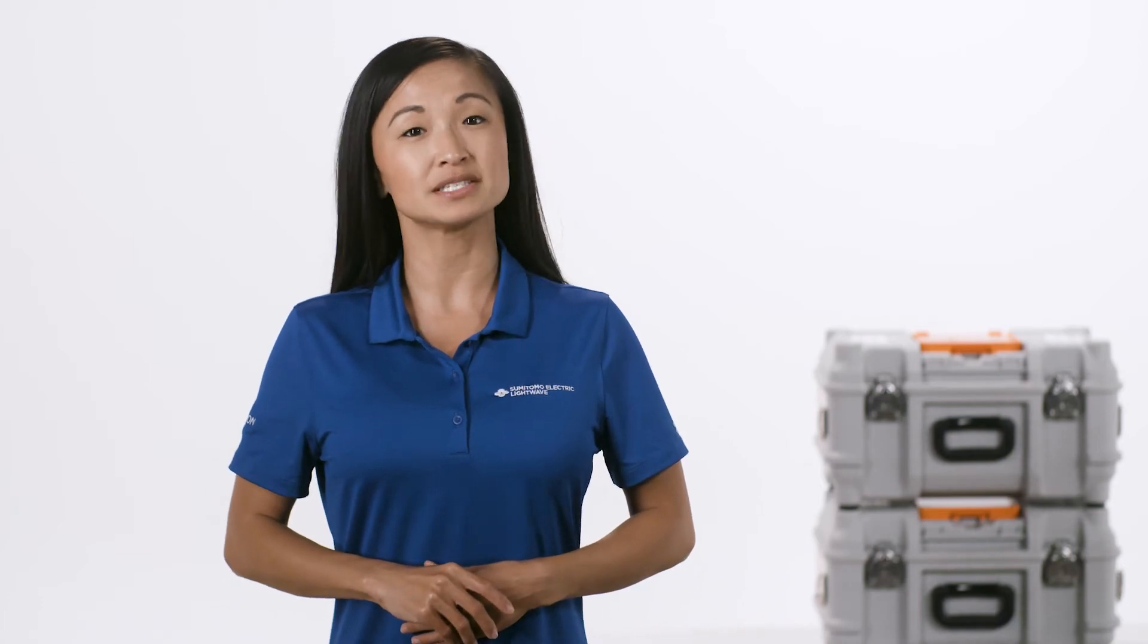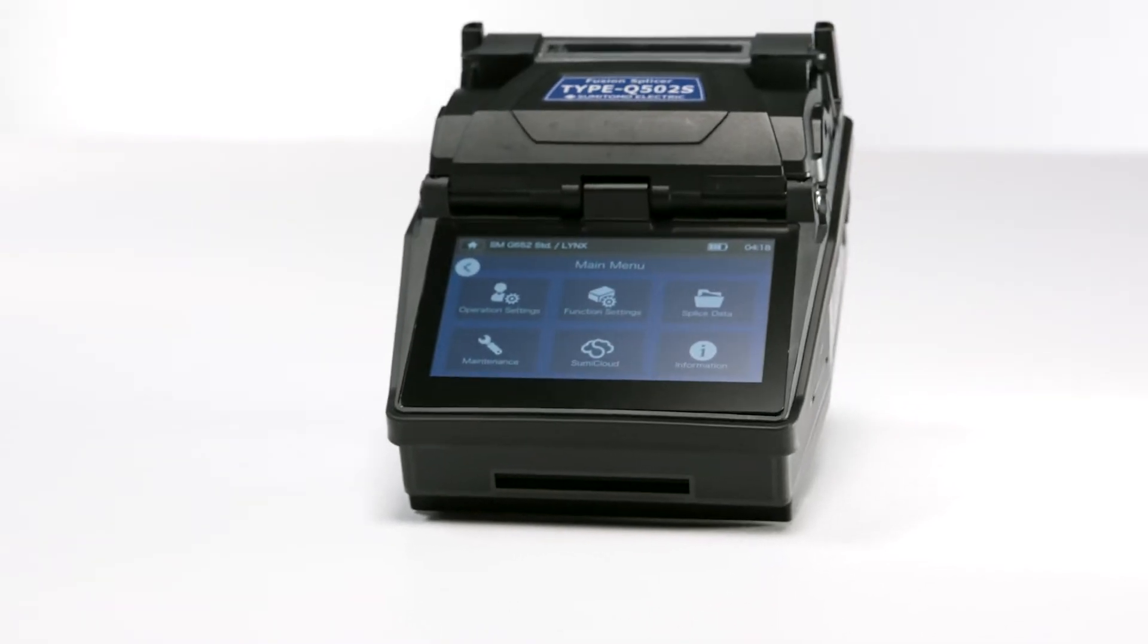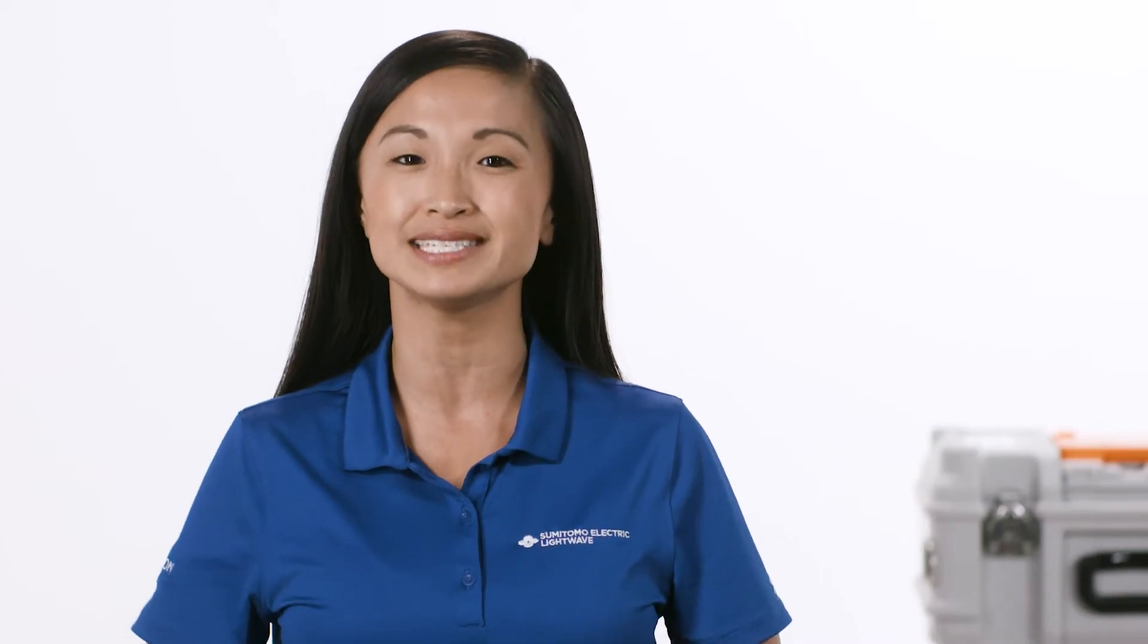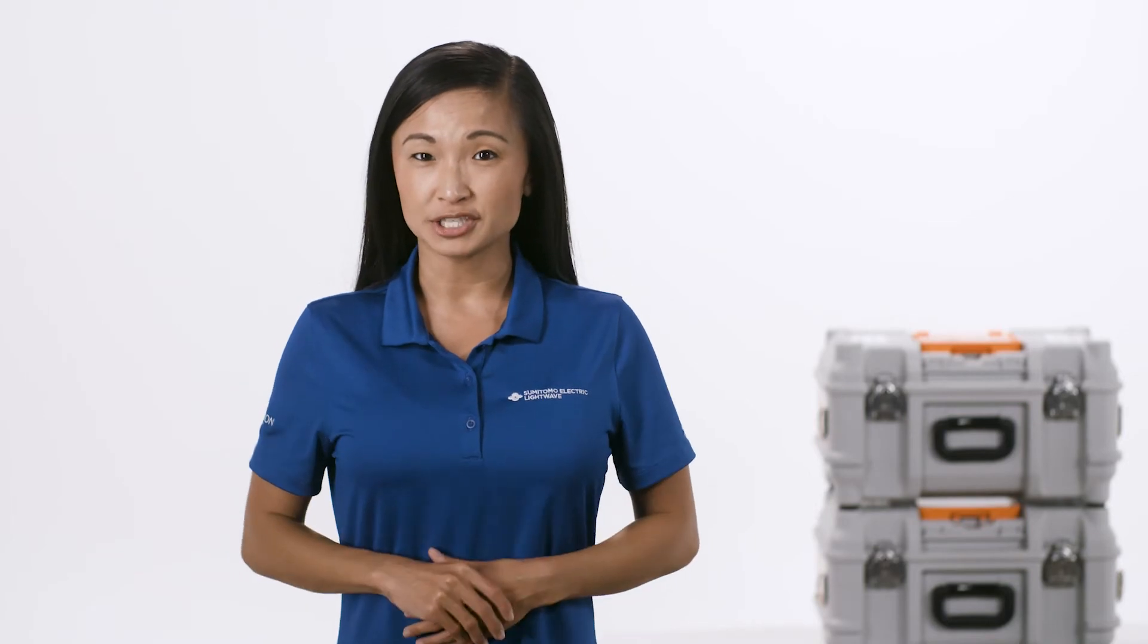Hi, in this video we're going to walk through the steps to prepare a single fiber for an arc test. We'll be using the Q502S, Sumitomo Electric's latest active clad alignment fusion splicer. Single fiber preparation includes four orderly steps.